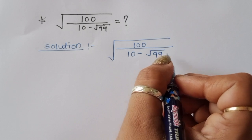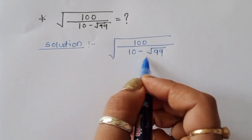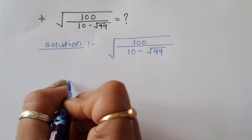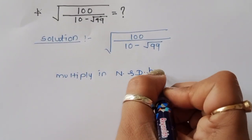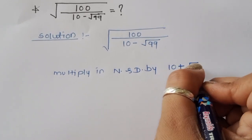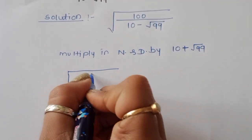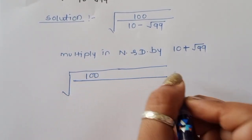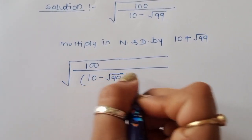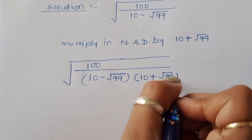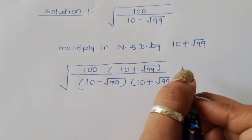Now we can rationalize this denominator. To rationalize, we multiply and divide by the conjugate: 10 plus square root of 99, in both numerator and denominator. So we get 100 divided by (10 minus √99) times (10 plus √99) in the denominator, and (10 plus √99) in the numerator.